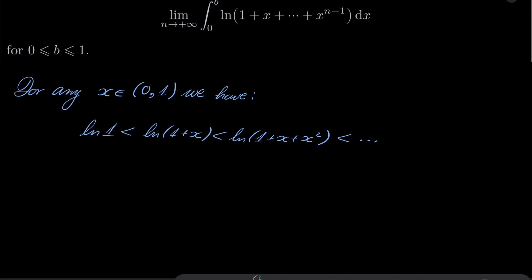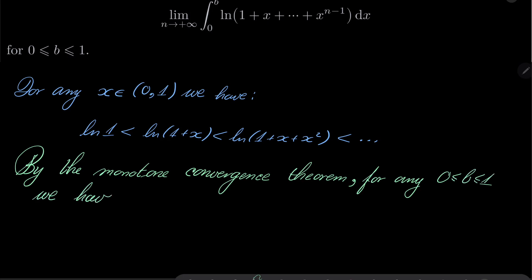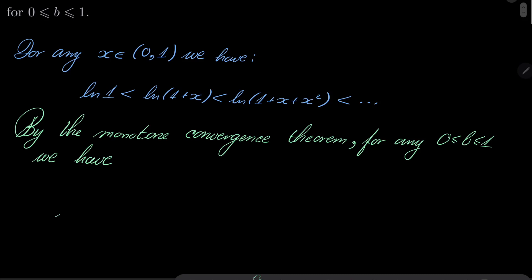So we can directly apply the monotone convergence theorem. By the monotone convergence theorem for any b between 0 and 1, we have limit. We can just take this limit and put it inside our integral.